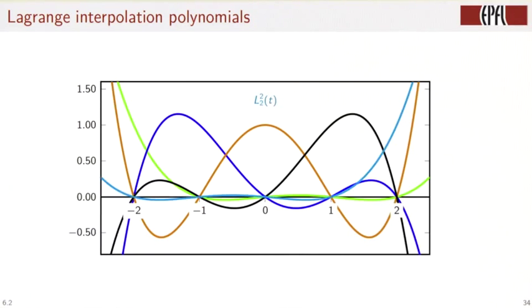l 1 of 2, which is the black curve, and finally l 2 of 2, which is the light blue curve. The important thing is that these polynomials are 1 at their index n and they are 0 at the other integers.